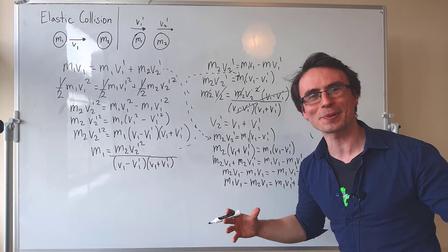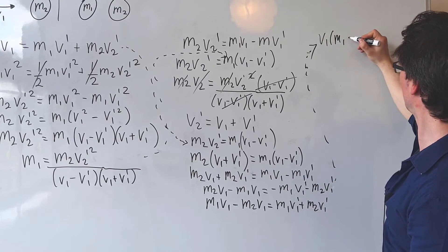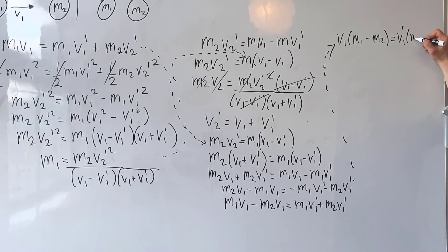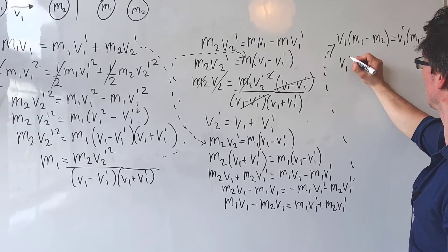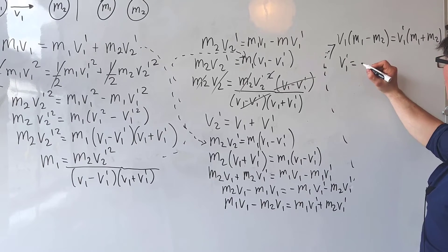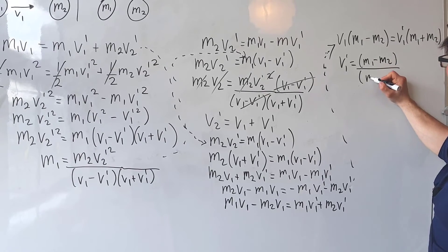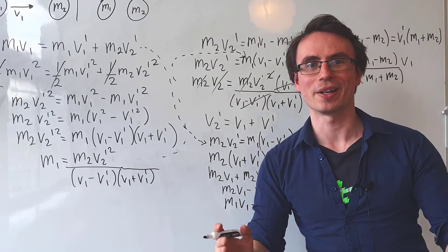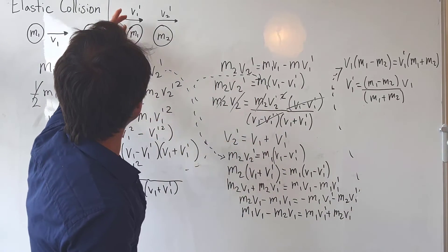Factoring both sides: v1 times (m1 minus m2) equals v1 prime times (m1 plus m2). Rearranging for v1 prime, the final speed of the initial particle is: v1 prime equals (m1 minus m2) over (m1 plus m2) multiplied by v1. And this is the derivation of this important equation.